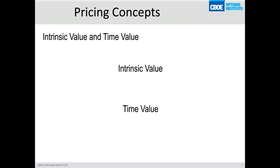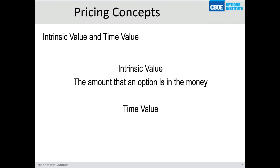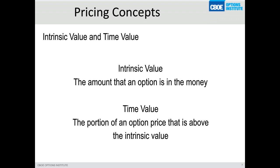The price of an option is made up of two things: intrinsic value and time value. Intrinsic value is that in-the-money amount of an option, and anything in excess of that intrinsic value we call time value. When we talk about volatility — which we will cover — just keep in mind that when volatility goes higher, both call and put premiums go higher. When volatility goes lower, both call and put premiums go lower. But it's the time value portion that expands or contracts, not the in-the-money amount.